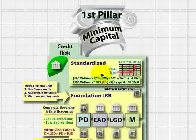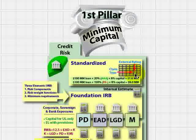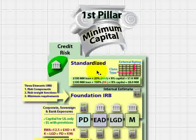In regard to the standardized approach, we saw that the treatment is to take the exposure — that would be a credit loan asset, for example — and multiply it by a risk weight, where the risk weight is a function of the type of counterparty (a bank, a corporation, a sovereign entity) and the credit rating. When we looked at that, we were generally referring to unsecured loans or unsecured exposures, that is to say they are not supported by collateral or some other financial guarantee.